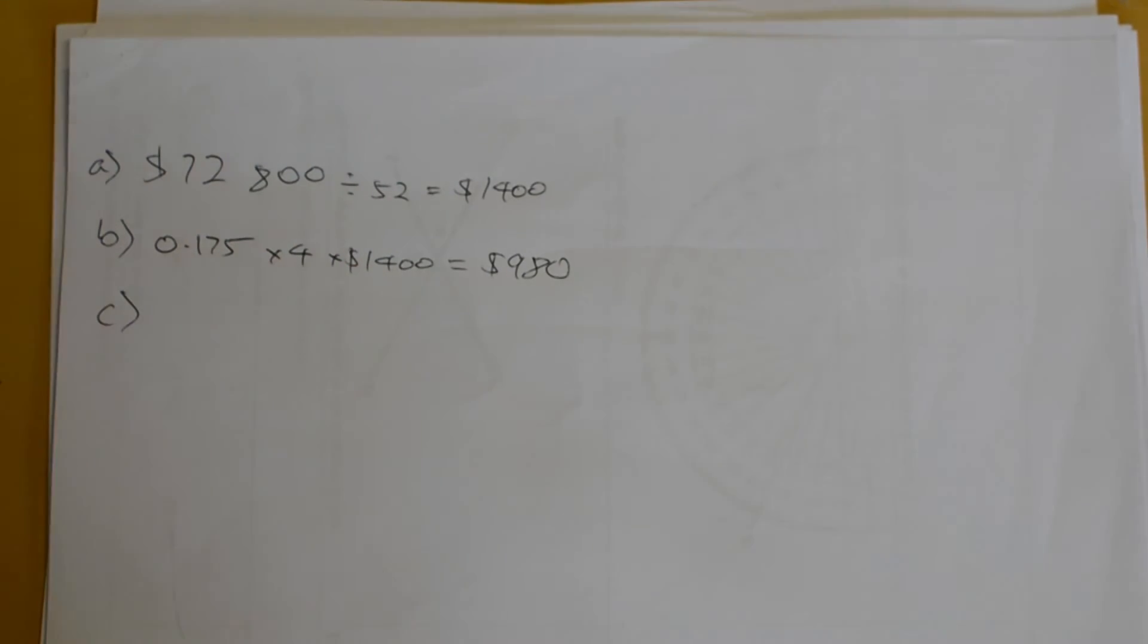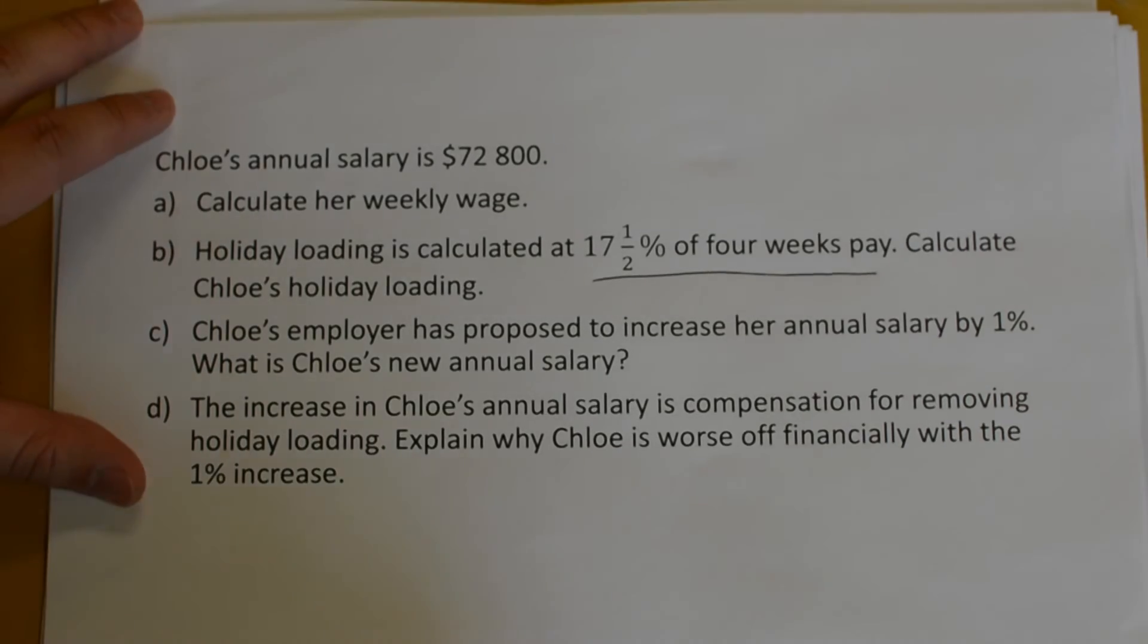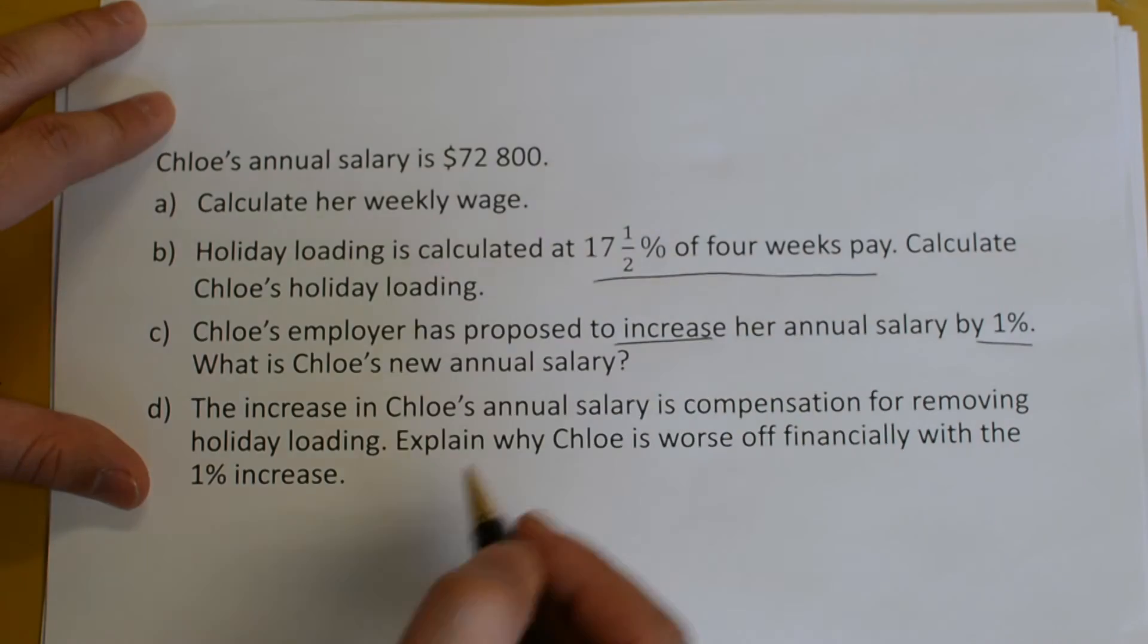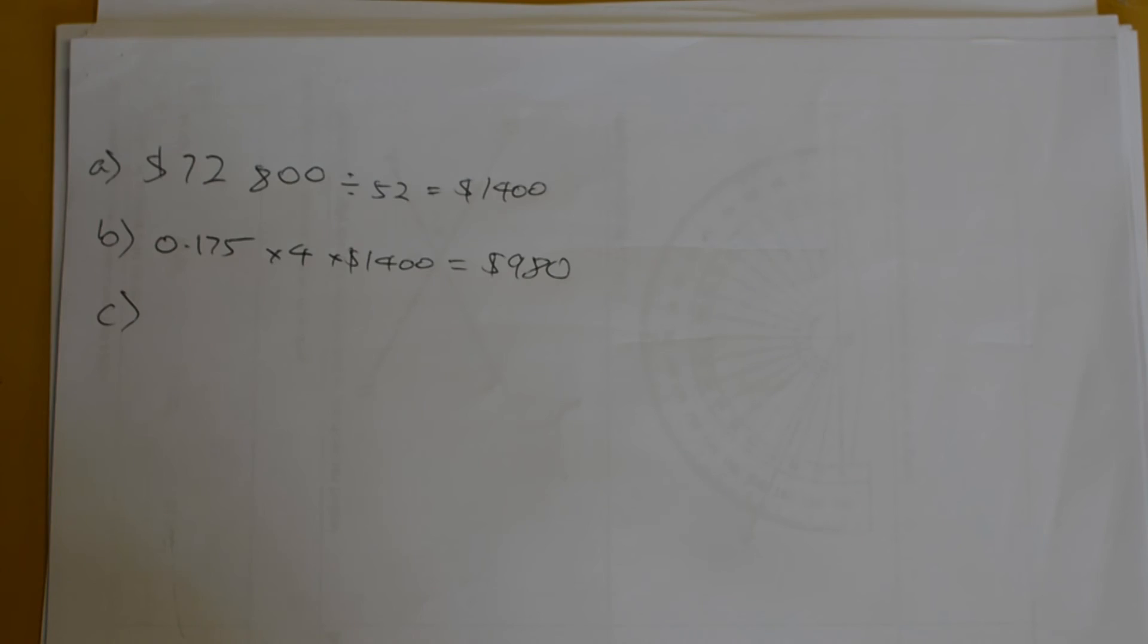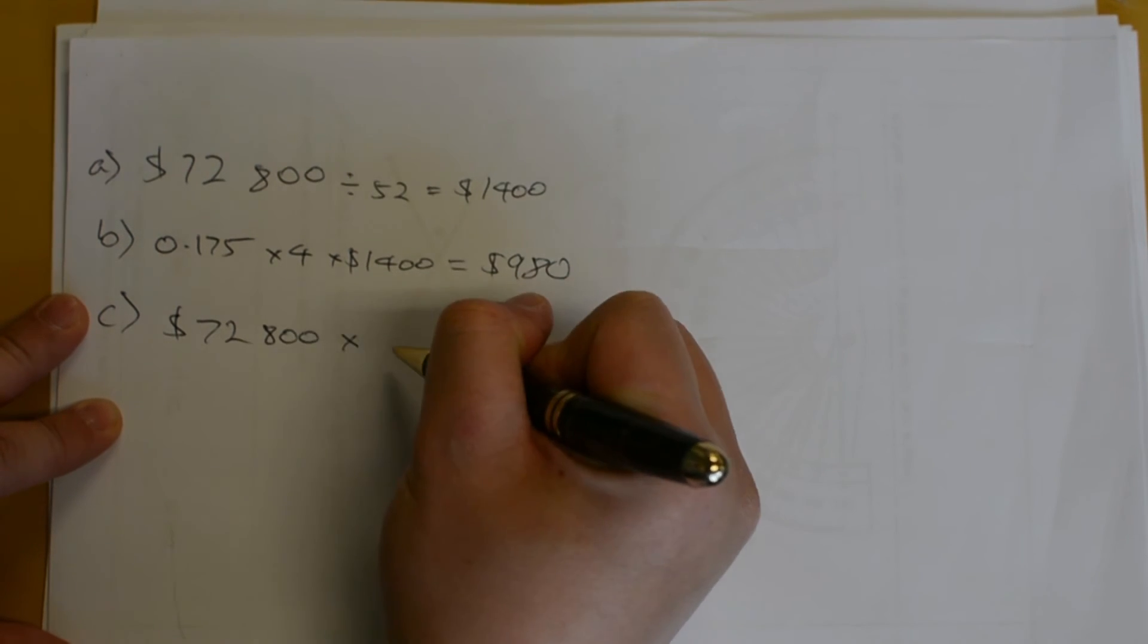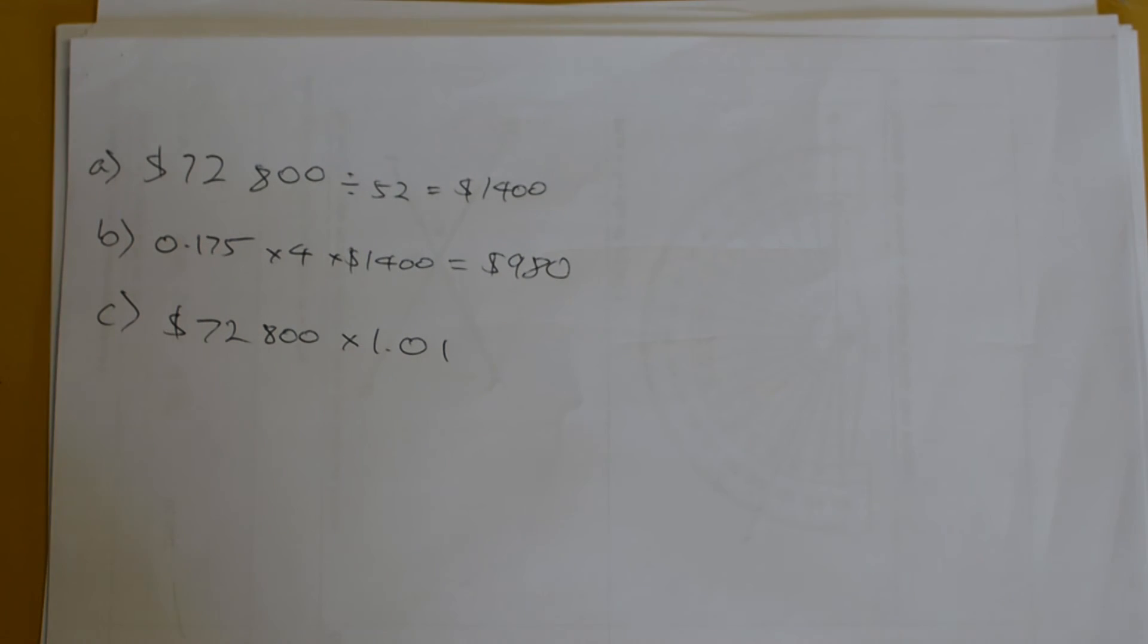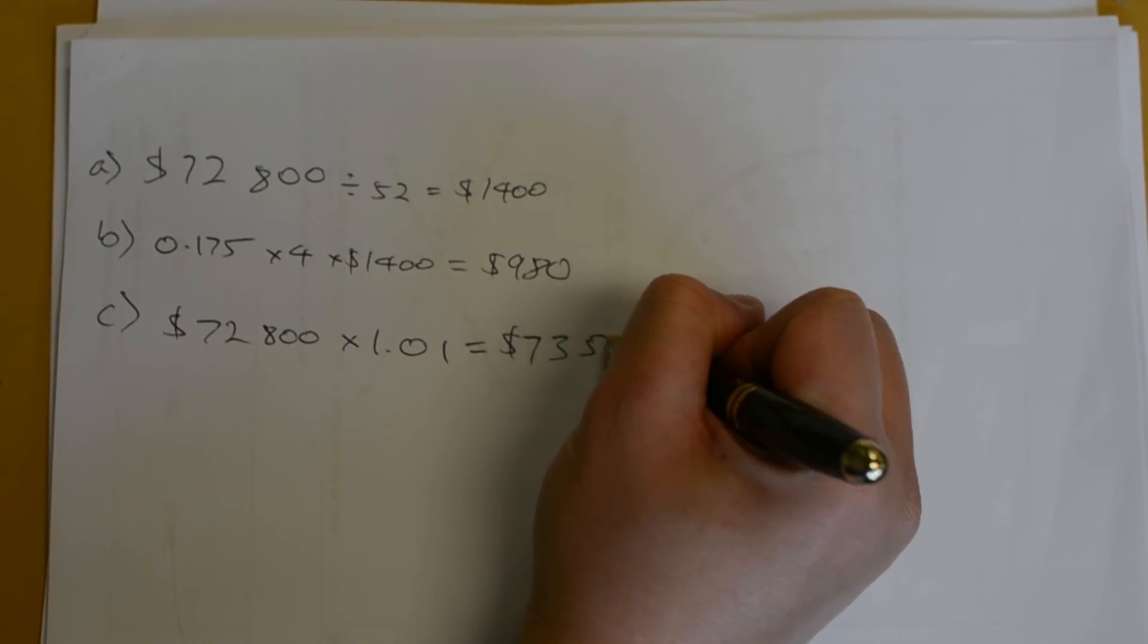Part C, Chloe's employer has proposed to increase her annual salary by 1%. Keywords here are increase 1%, and that's her annual salary. What is Chloe's new annual salary? Well, her normal annual salary is $72,800. If we are increasing by 1%, so we are doing 101%, or in decimal form, 1.01. Doing this in the calculator will get you $73,528.